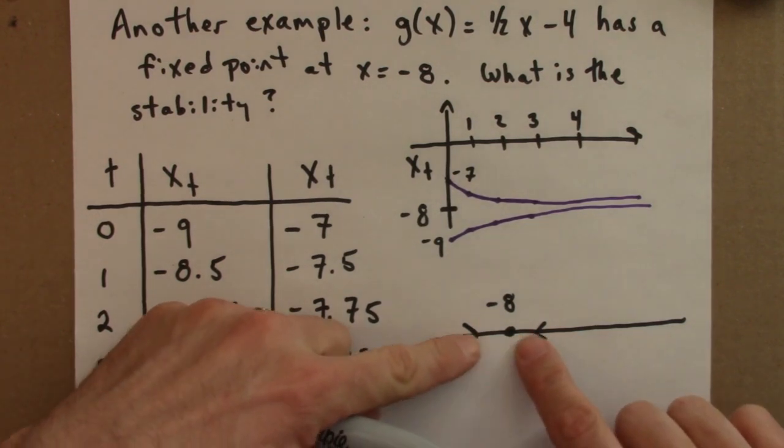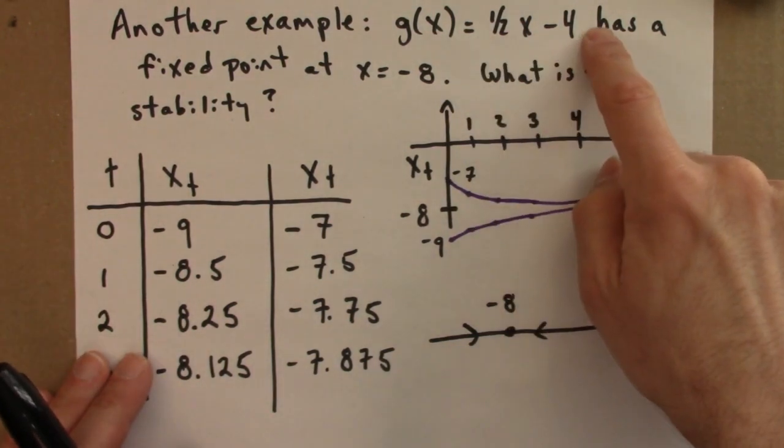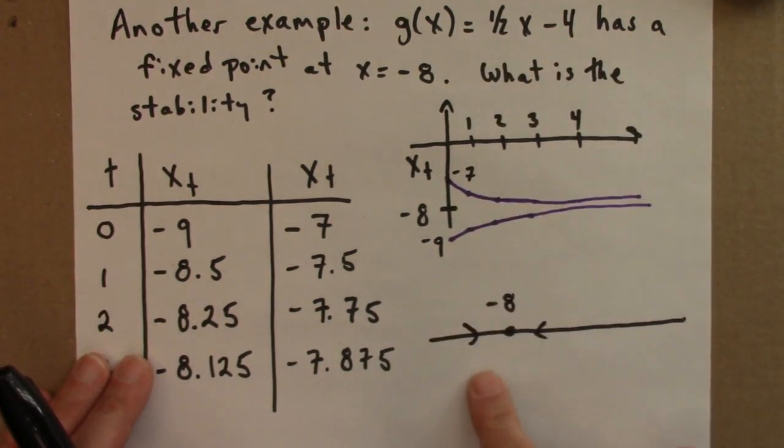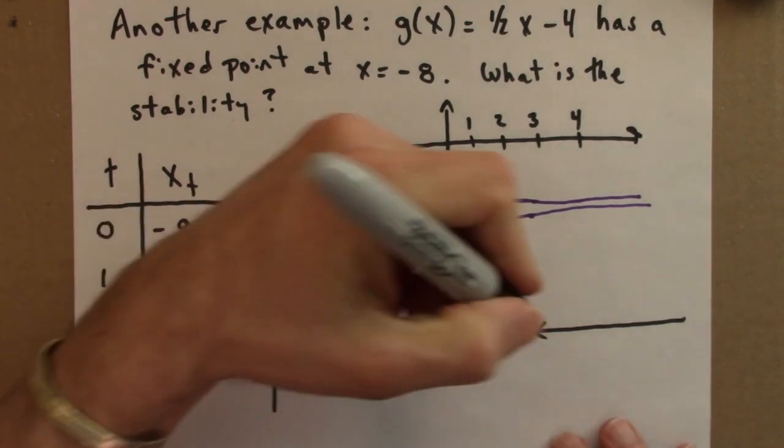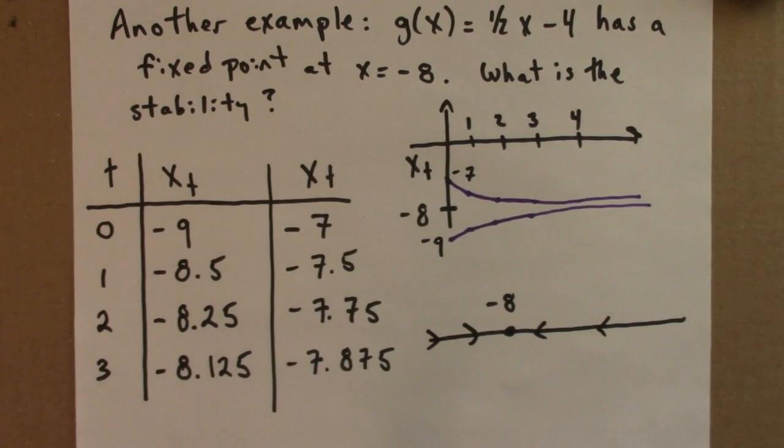Stable because the arrows are going in. Orbits are getting pulled towards it. It turns out for this function that there are no other fixed points. So this is the entire story. Any initial condition will get pulled in to minus 8.